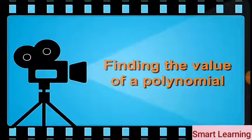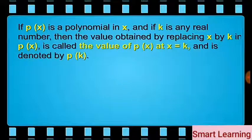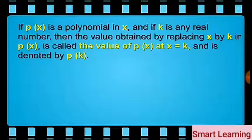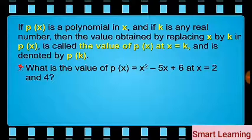After studying about the various types of polynomials, let us find out the value of a polynomial at a given real number. If p of x is a polynomial in x and if k is any real number, then the value obtained by replacing x by k in p of x is called the value of p of x at x equals k, and is denoted by p of k. For example, what is the value of p of x equal to x squared minus 5x plus 6 at x equal to 2 and 4?